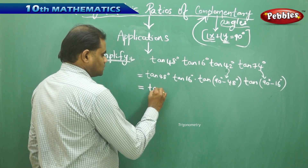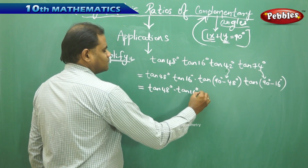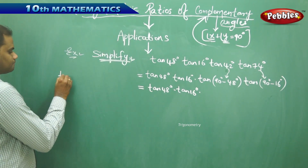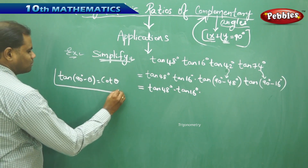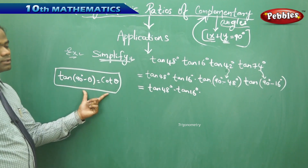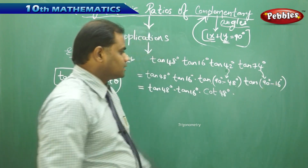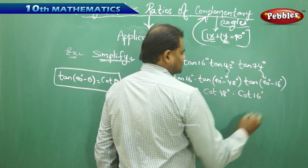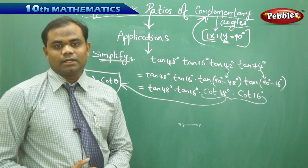So the expression becomes tan 48° × tan 16° × tan(90° − 48°) × tan(90° − 16°). Now using the formula tan(90 − θ) = cot θ, we substitute: tan(90° − 48°) becomes cot 48°, and tan(90° − 16°) becomes cot 16°. So the expression is tan 48° × tan 16° × cot 48° × cot 16°.